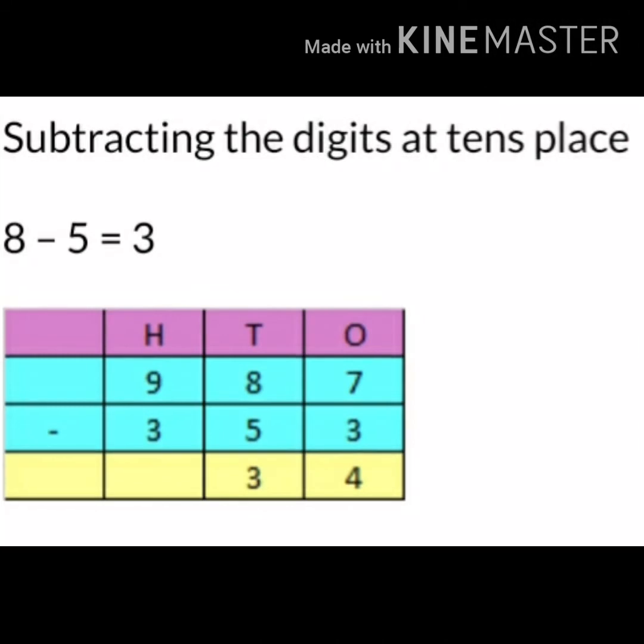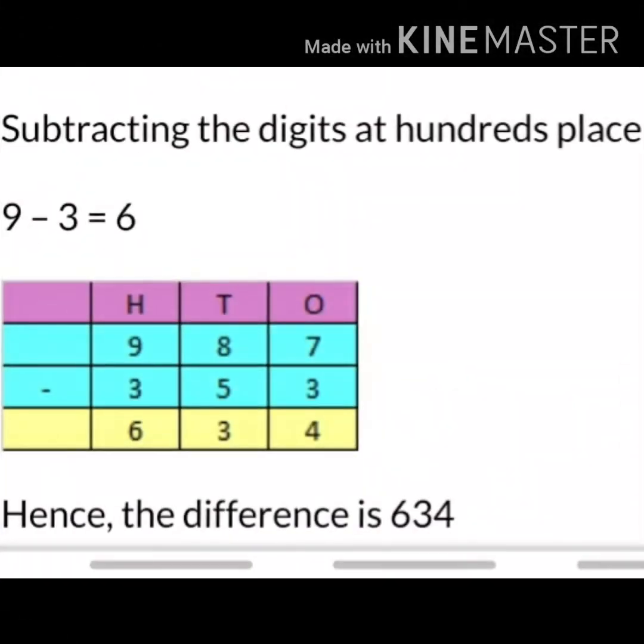Now after that, subtract the digit at tens place. What are the numbers in the tens place? 8 and 5. So we'll subtract 5 from 8. It will give you 3. Perfect. You are doing well all the kids.